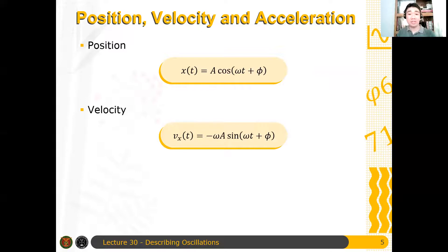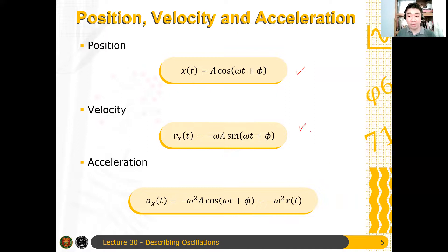For the velocity, we just need to differentiate x. We have minus omega A sine of omega t plus phi. And then for acceleration, we have minus omega squared A times cosine of omega t plus phi, or just minus omega squared times the position as a function of time. So you can use these expressions in obtaining some quantities involving the motion of a spring mass system.